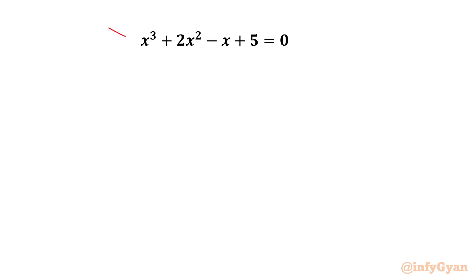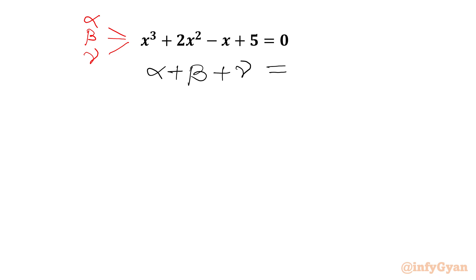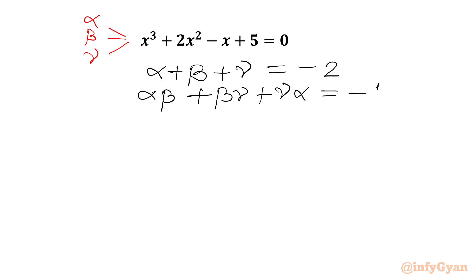Let's consider the roots of the given cubic equation as alpha, beta, and gamma. Then immediately using Vieta's method we can write three equations. First: the sum of roots, alpha + beta + gamma = -2. Second: sum of roots taken two at a time, alpha·beta + beta·gamma + gamma·alpha = -1. Third: product of roots, alpha·beta·gamma = -5.